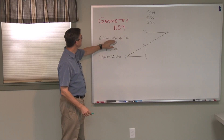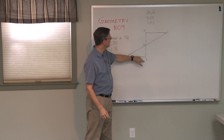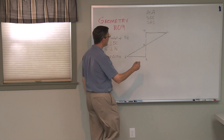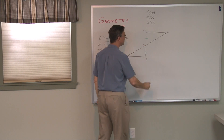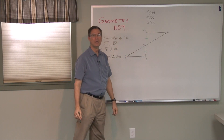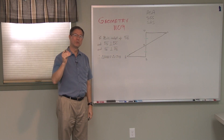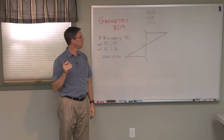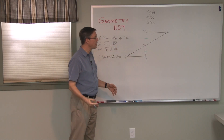So let me show you what you can do. B is the midpoint of DE, so if B divides DE into two equal parts, I can put a tick mark on each segment. The single tick mark means those two line segments are congruent — they're equal to each other. I know that.